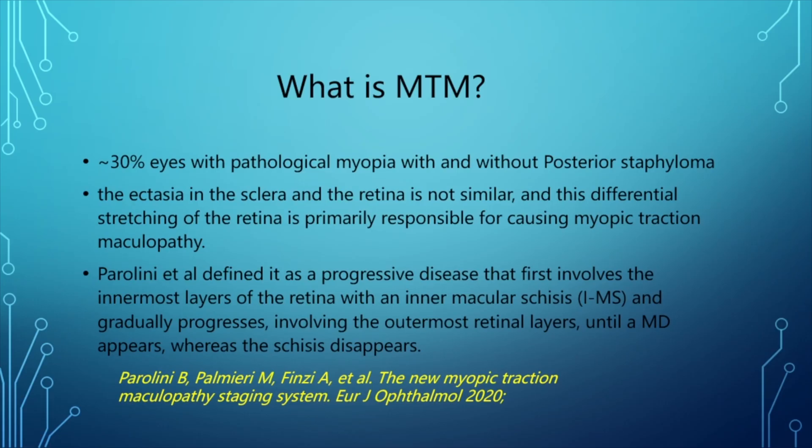Myopic traction maculopathy is mainly seen in approximately 30% of the eyes with pathological myopia, with and without posterior staphyloma. In pathological myopia, the ectasia of the sclera and the retina is not similar, and this differential stretching of the retina is primarily responsible for causing MTM.